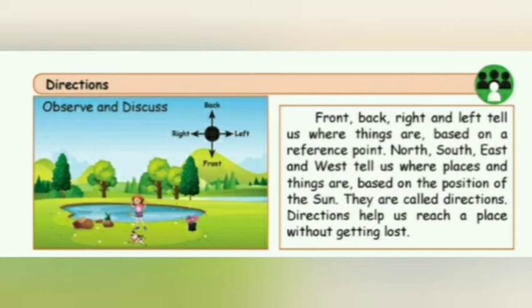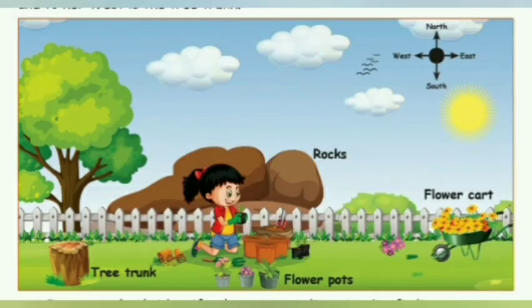Directions help us to reach a place without getting lost. The directions — North, South, East, and West — tell us where places and things are. These are based on the position of the sun. We have terms like front, back, right, and left, but they are referenced by the directions. The sun appears to rise in the east and it always sets in the west.